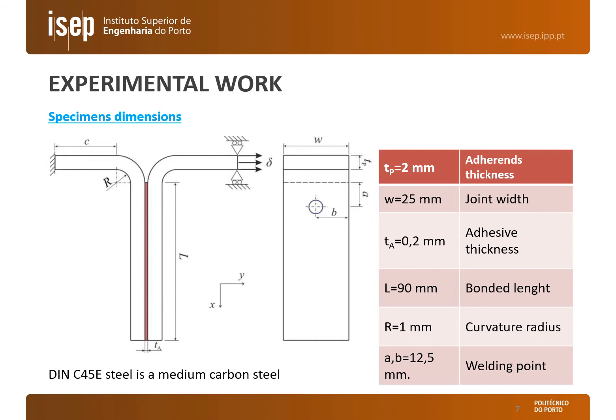The joint geometry studied under peel loads is depicted here on the left, and it was built through welding, adhesively bonded, and hybrid, which includes welded and bonded. The most relevant joint dimensions are shown in this table: adherend thickness 2 mm, joint width 25 mm, adhesive thickness 0.2 mm, bonded length 90 mm, adherend radius 1 mm. The spot welded positions are defined by A and B, both equal to 12.5 mm.